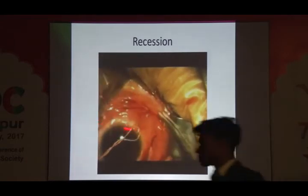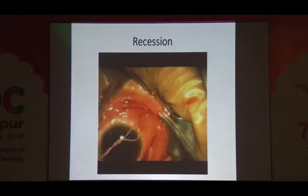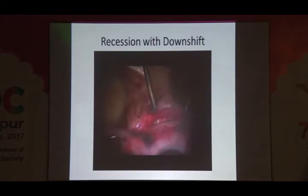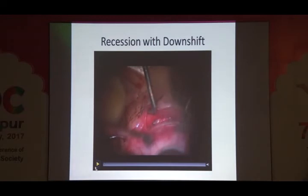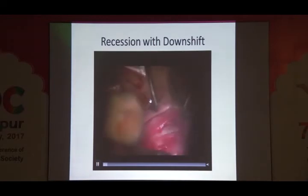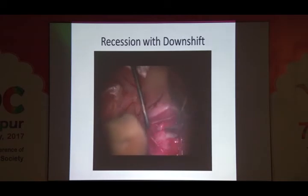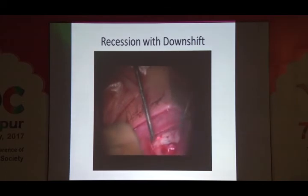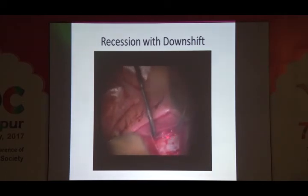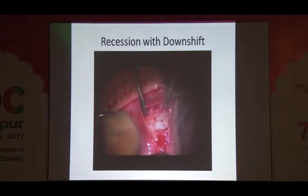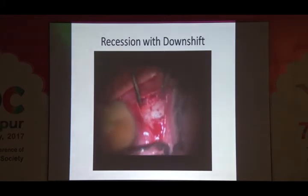You can also do it through a limbal incision where you give an incision and then make a flap, reflecting the entire conjunctiva and tenons backwards. There are variations to a recession — this is a recession with a downshift. Sometimes you have to do an upshift or a downshift to correct patterns. Here at the end where we reinsert the muscle, compared to the original insertion, this insertion is downshifted by about half the muscle length. This was done to correct a V pattern or an A pattern on the lateral rectus.